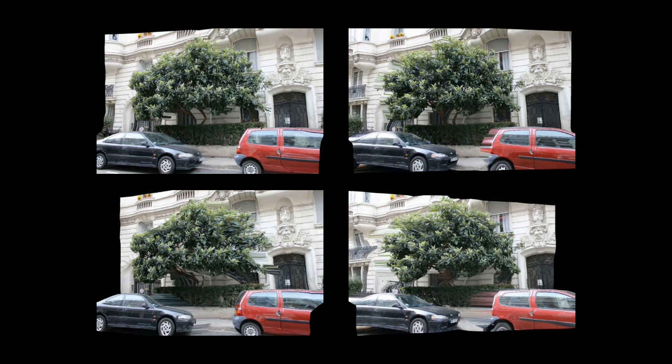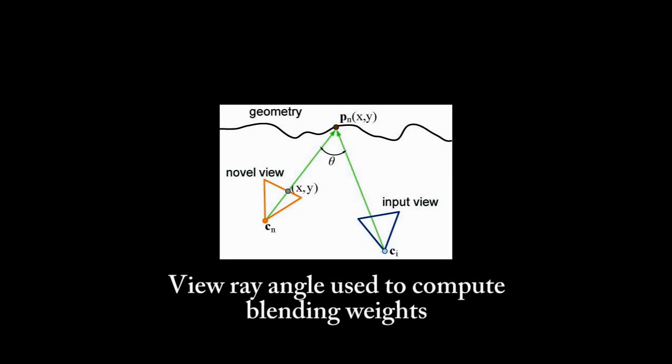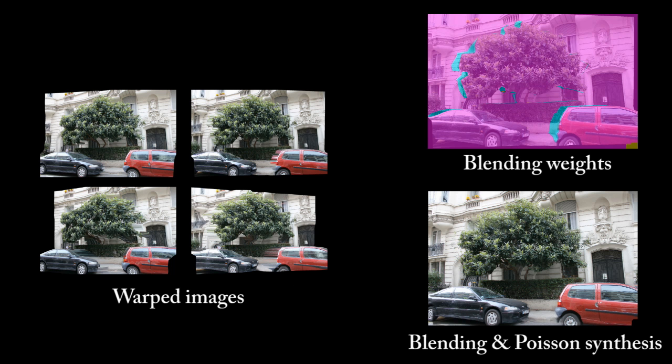Our rendering pipeline first selects four images to warp. Blending weights for the warped images are computed using the view-ray angle for each pixel. The elastic regions for each image are given very low weights since they are heavily deformed. The warped images are blended to give the final image. We use Poisson synthesis as a post-process to alleviate the spatials.